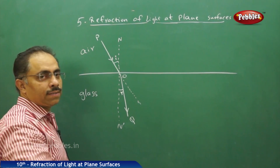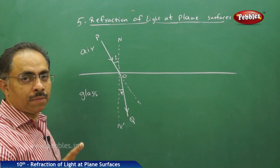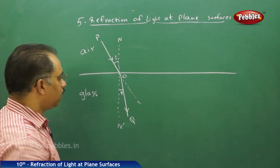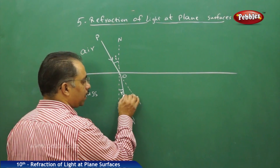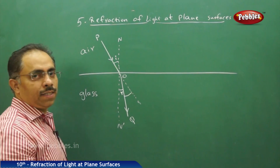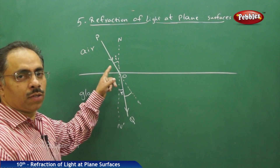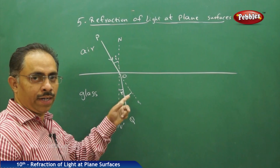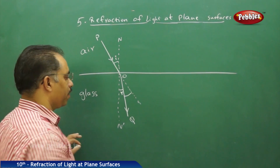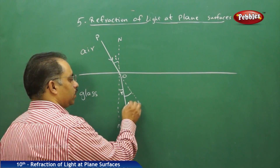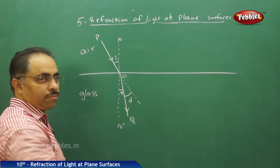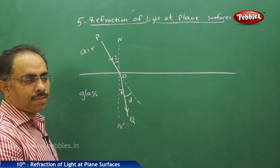We can say the light ray is deviating from its path. To know by how much, we will measure the angle between the direction of the original incident ray and the refracted ray. We will call this the angle of deviation, denoted by D.